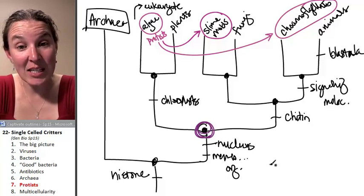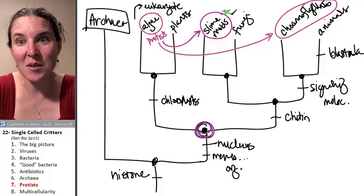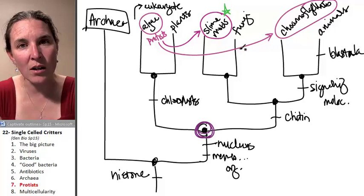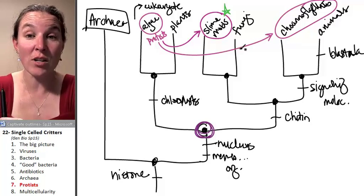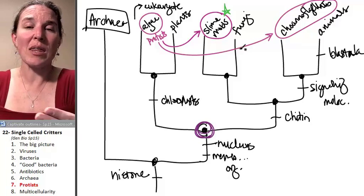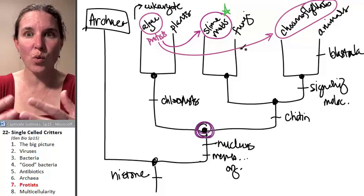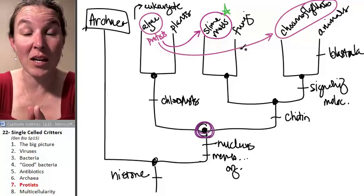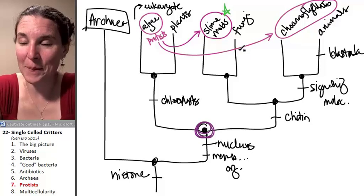I think what I want to tell you next is I want to look at slime molds because they are an awesome example of colonial multicellularity. So slime molds actually found it beneficial. They're single-celled critters, but they found it beneficial to, at certain points in their life cycle, to grow, to join together and become multicellular for reproductive purposes really, which is kind of cool.